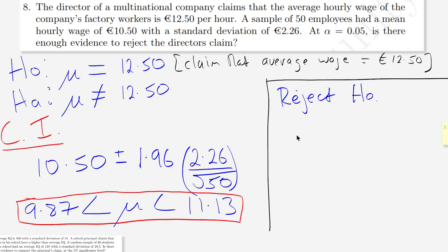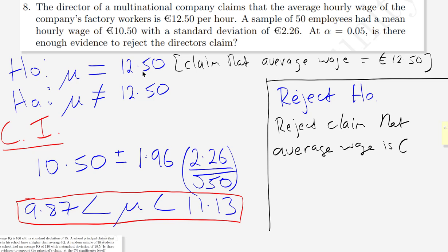It's always the null hypothesis that you either reject or do not reject. Since we're rejecting the null hypothesis, and the claim was the same as the null hypothesis, we also reject the claim that the average wage is €12.50.